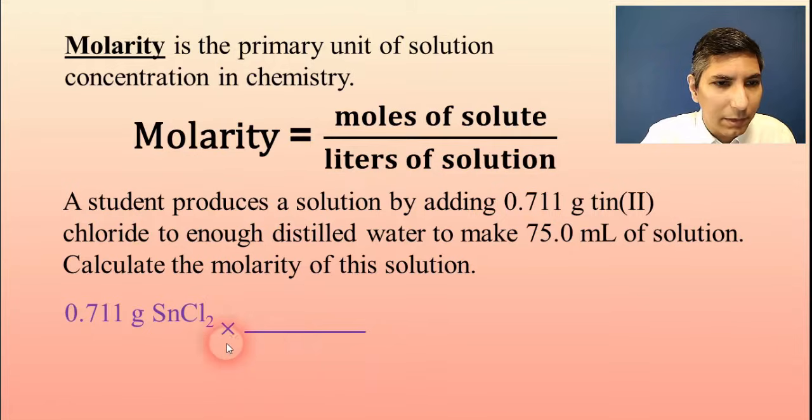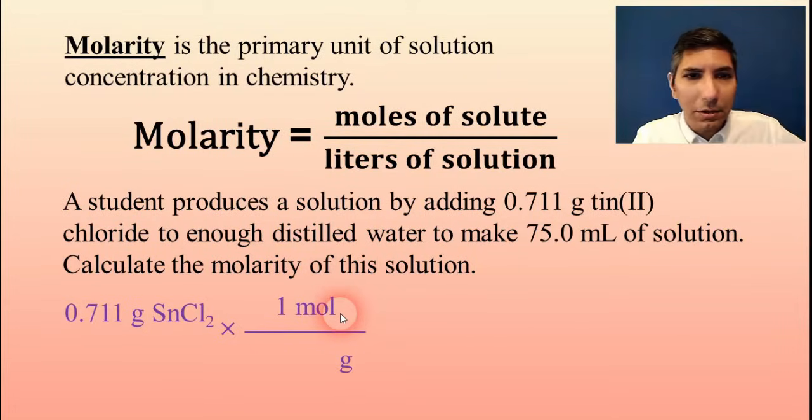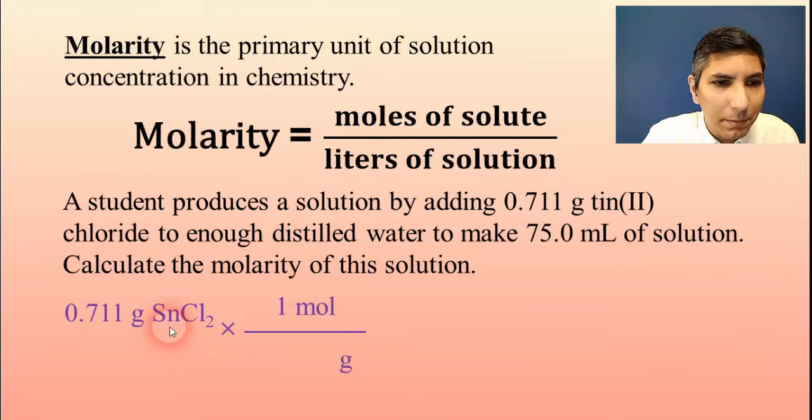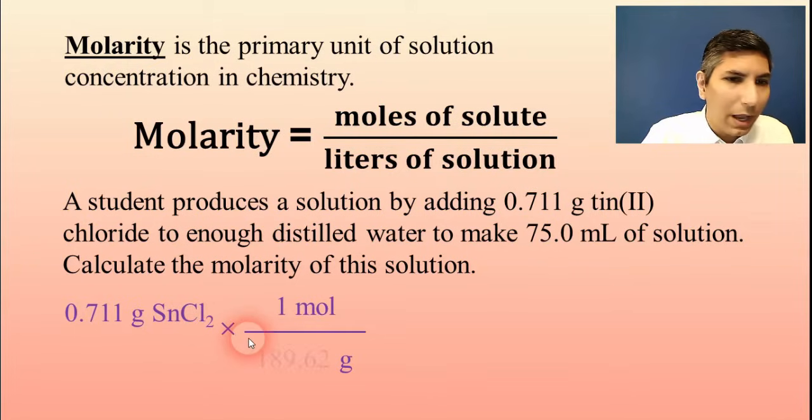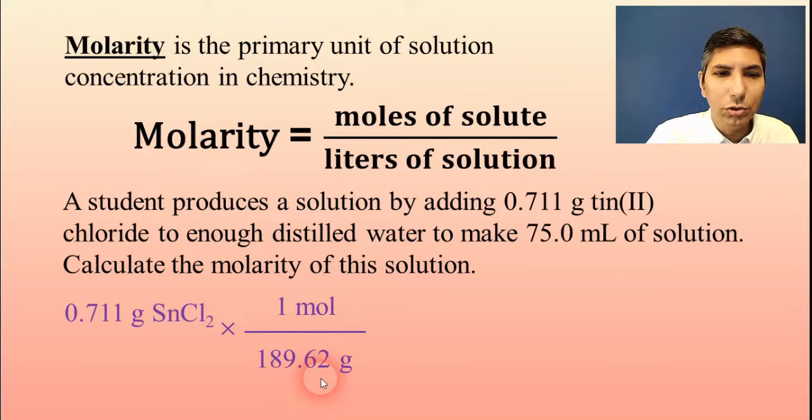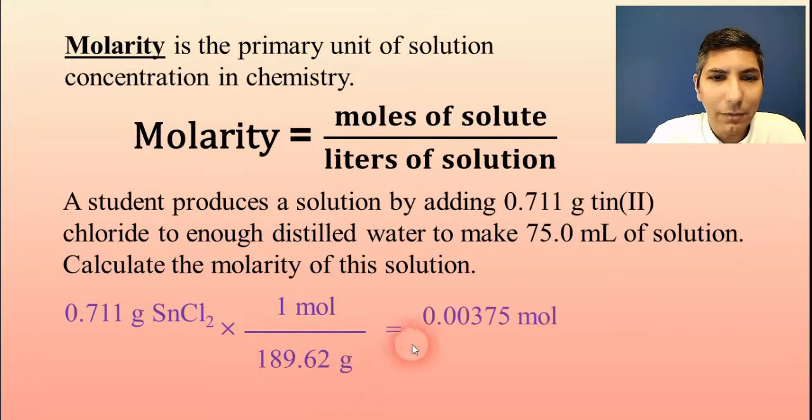And that means that in our conversion factor, grams have to go on the bottom. We'll put one mole on top. We can use our periodic table here to find out how many grams are in one mole of that stuff. And when you add it together, one tin atom and two chloride atoms, I get a total of about 189.62 grams in one mole of that substance. So when I divide this out, I get 0.00375 moles.